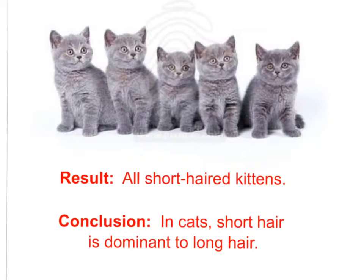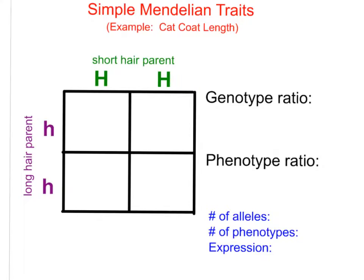So we know that coat length in cats follows simple Mendelian genetics. It's a dominant recessive inheritance pattern, and that is indeed what happened. In cats, short hair is dominant to long hair, so we see short hair in all of the kittens. We'll do a little review here when we set up our Punnett square for a simple Mendelian trait. Let the capital H be the dominant allele for short hair, and the lowercase h be the recessive allele for long hair.